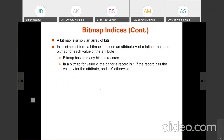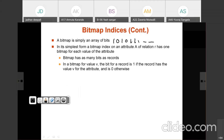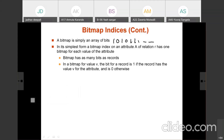A bitmap is simply an array of bits, such as 1, 0, 1, 0, 1, 1, and so on. In its simplest form, a bitmap index on attribute A of relation R has one bitmap for each value of the attribute. For example, if we consider gender, there is one bitmap for F (female) and one bitmap for M (male).